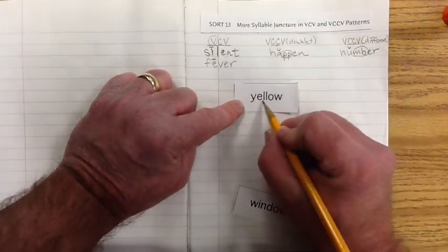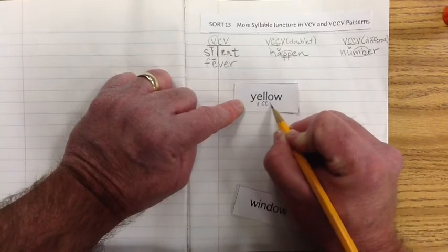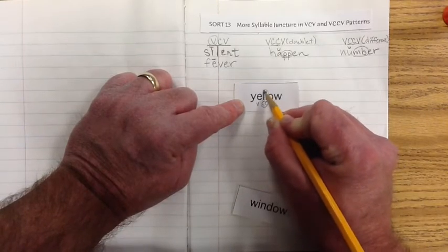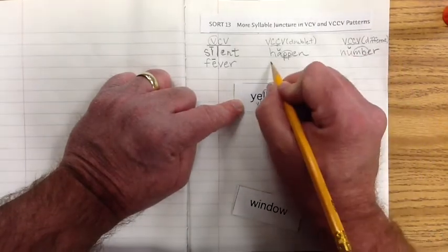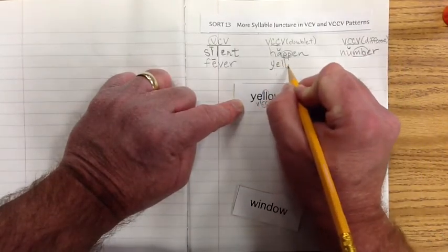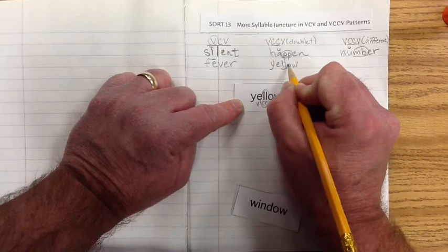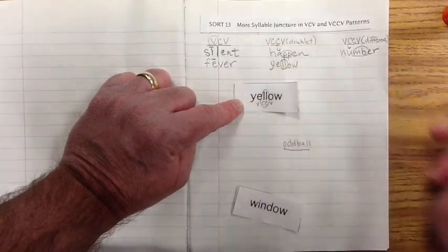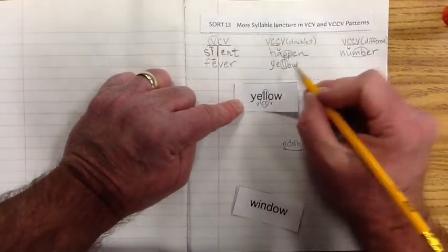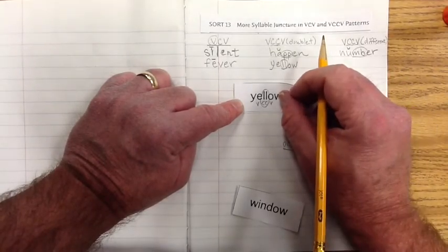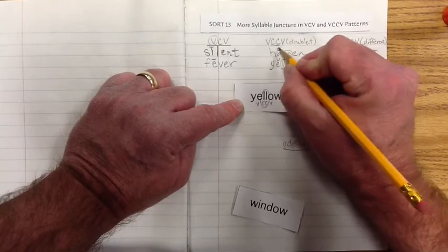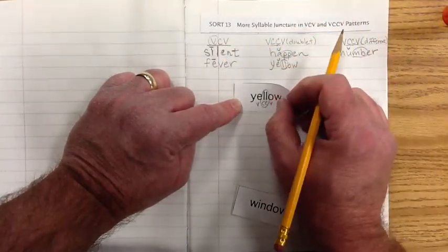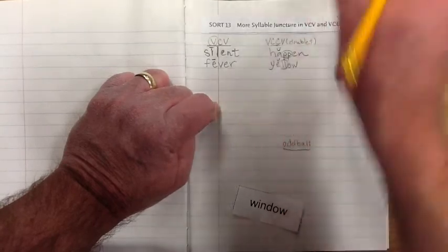Here we have yellow. Here we have our vowel-consonant-consonant-vowel. These two consonants are doubles. They're doublets. So let's go ahead and write yellow. We have two consonants and they're two of the same, so that's under the doublet. Let's say the word yellow. Yellow, eh, eh. That's our short E. So we see a consistency there, don't we? We have two long vowels. We have two short vowel sounds here.